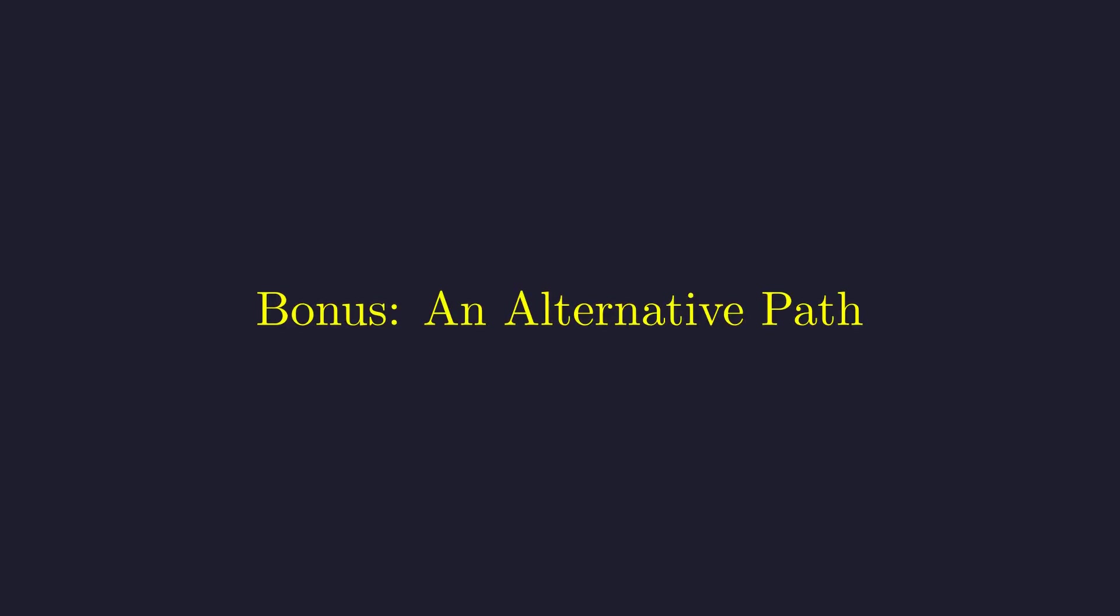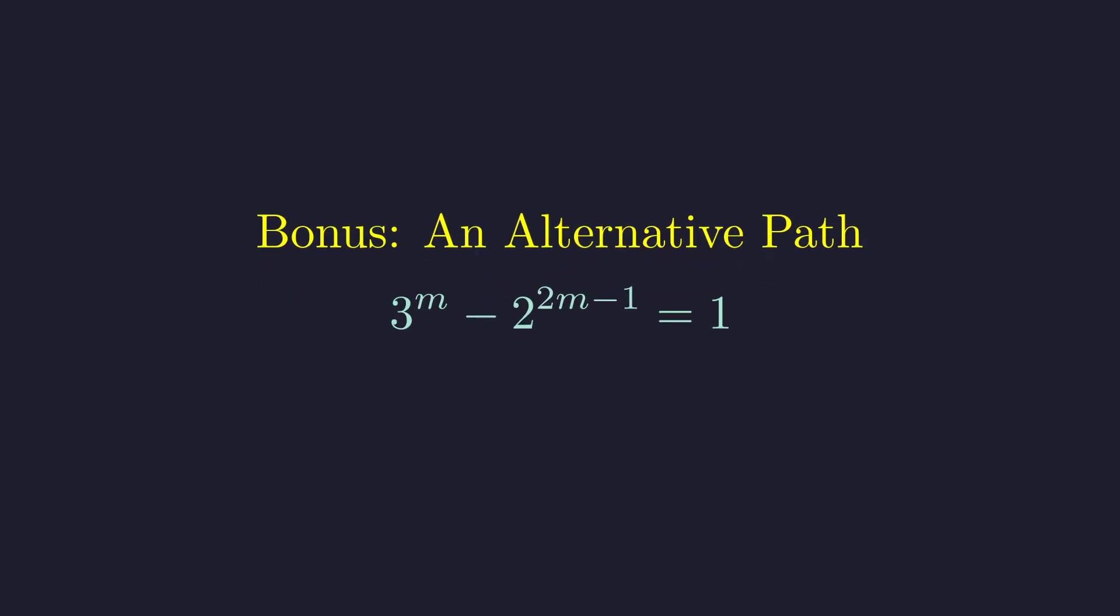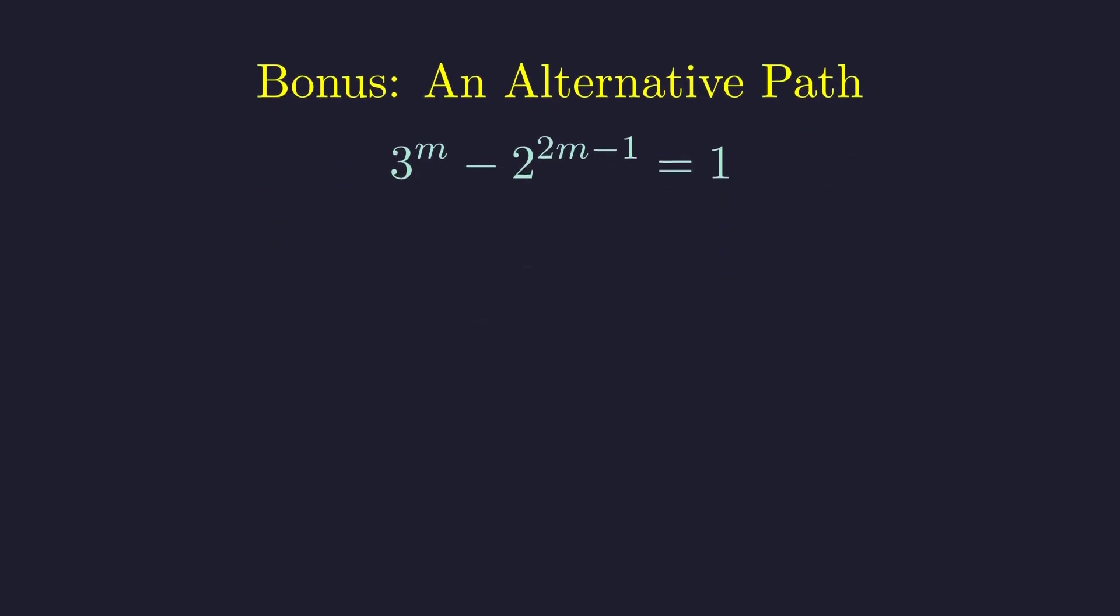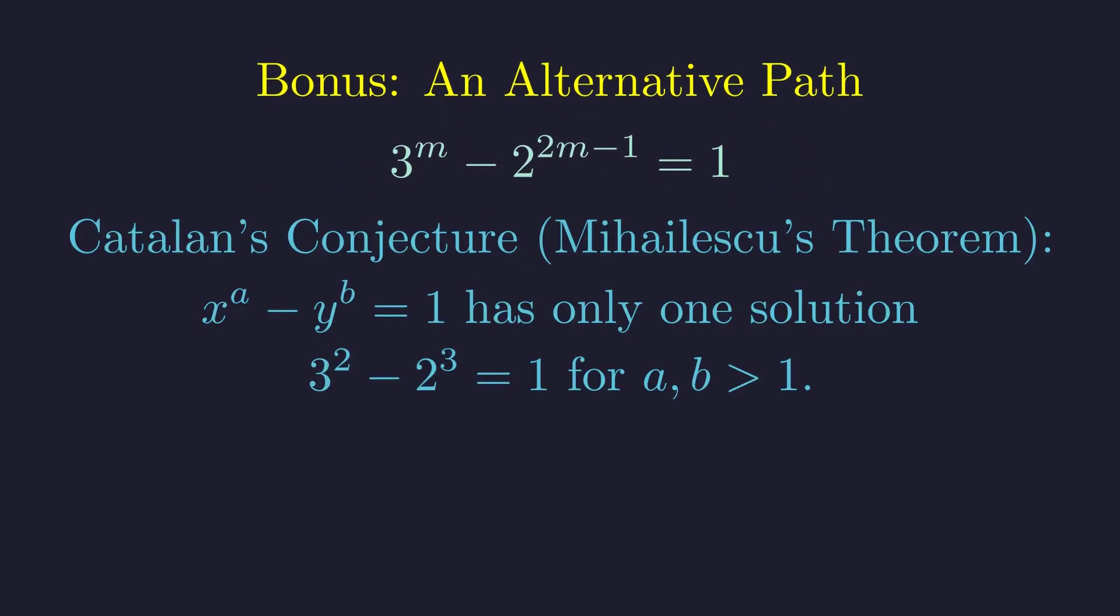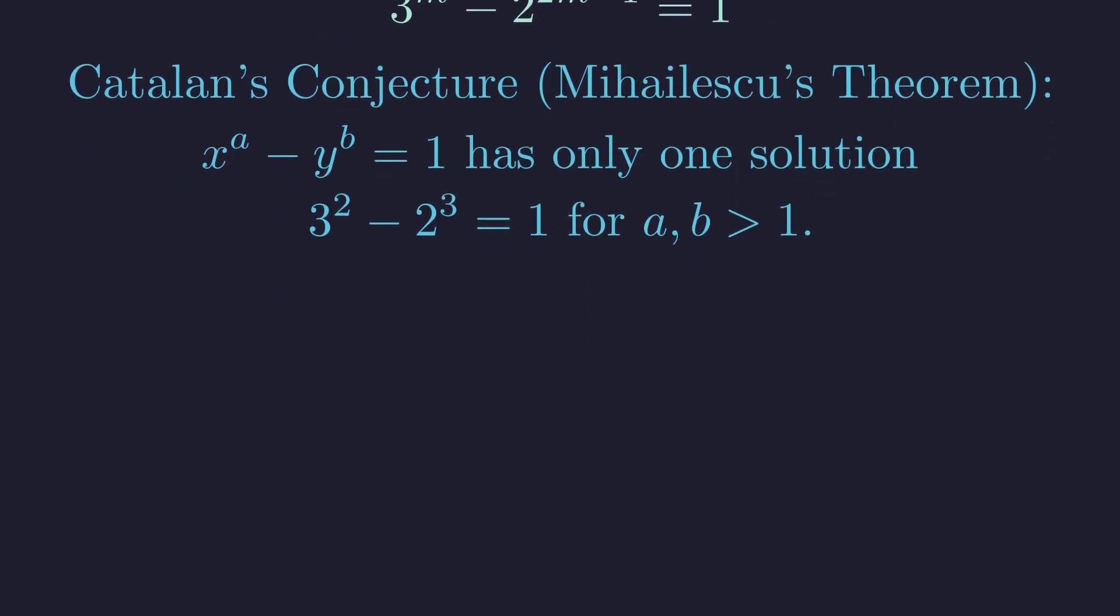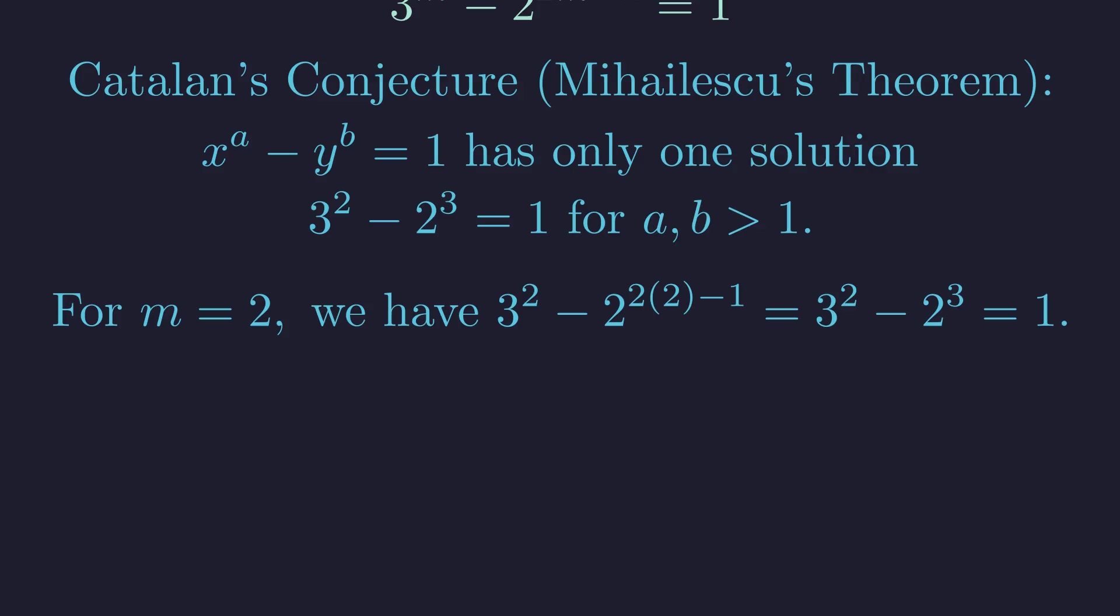Before we finish, here's a really cool connection to one of the deepest theorems in number theory. Remember this equation from our even case? We needed to find when this equals 1. This connects to Catalan's conjecture, which was finally proven in 2002. It says that 8 and 9 are the only consecutive perfect powers. And remarkably, our case with m equals 2 gives exactly that unique solution. This powerful theorem immediately tells us there are no other solutions.